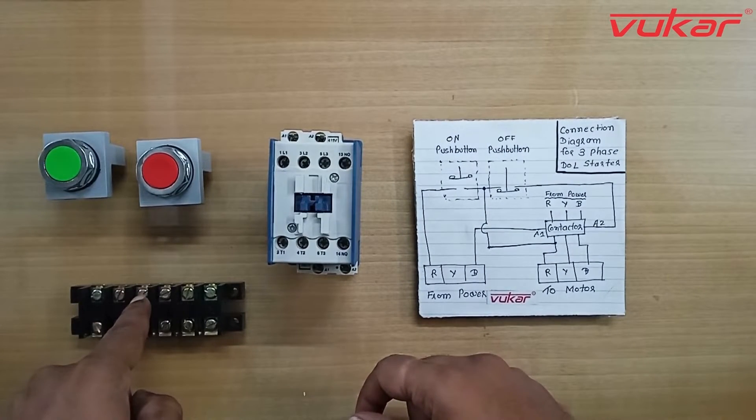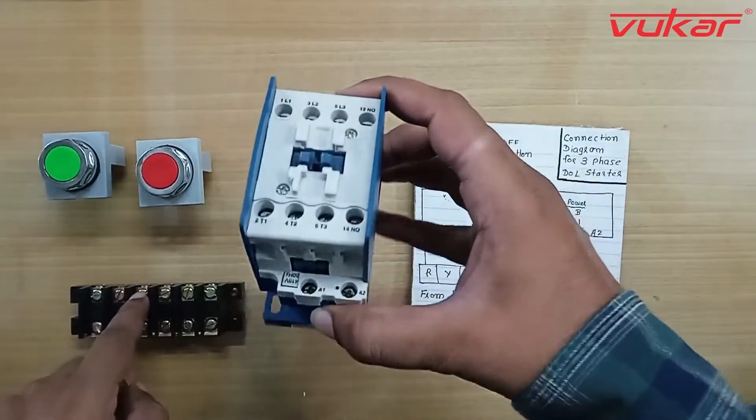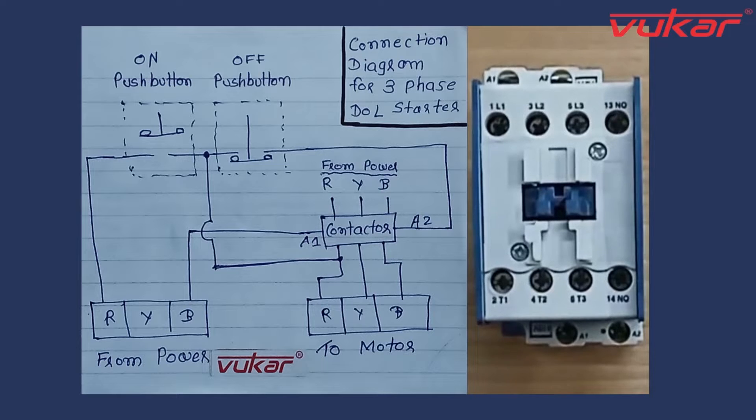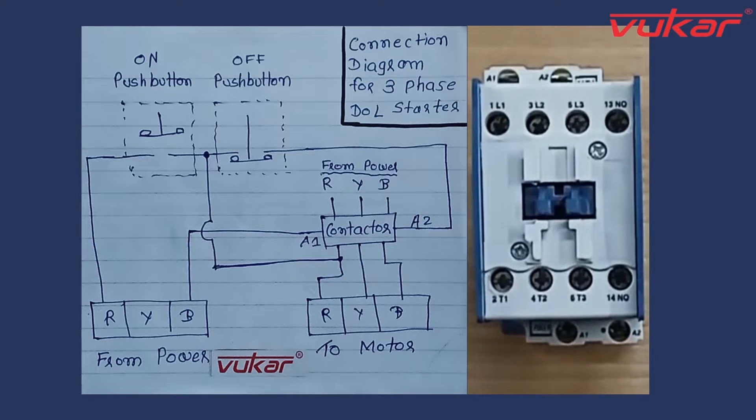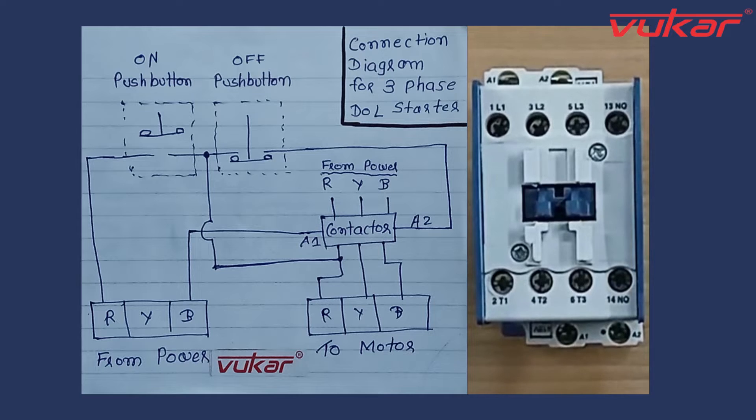Here you can see that the contactor coil A1 is directly connected with B phase. From the contactor, you can see that input terminals L1, L2 and L3 are directly connected with R, Y, B power source.